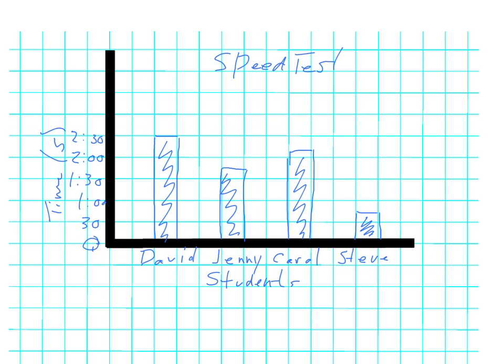You'll be able to see that the spacing is the same — the width of the bars is the same — and no one has their name squeezed in anywhere; they all have a nice even amount of space. Label your x and y axes and you're good to go. That's a very quick and easy bar graph — I hope you found it helpful. Good luck!